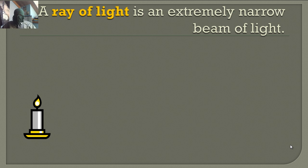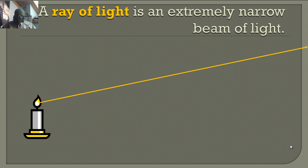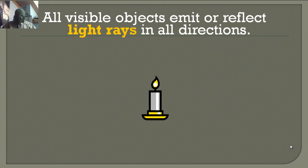A ray of light is an extremely narrow beam of light. When you're talking about light rays, we're just talking about one little chunk of that light. We know that light goes everywhere in infinite amounts of directions.